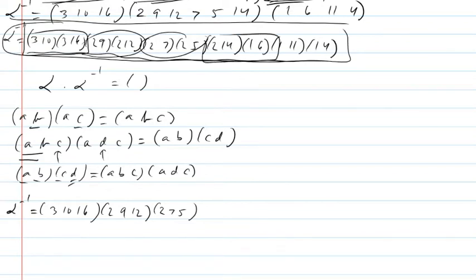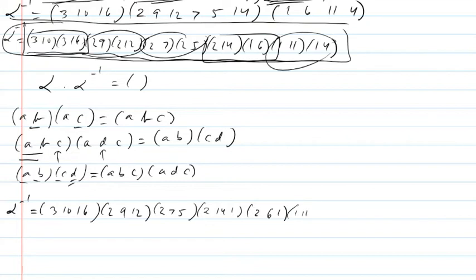This one's interesting: (2, 14) and (1, 6) don't have the same first number. I can write this as (2, 14, 1) and (2, 6, 1). And then finally, (1, 11), (1, 4) is the 3-cycle (1, 11, 4).